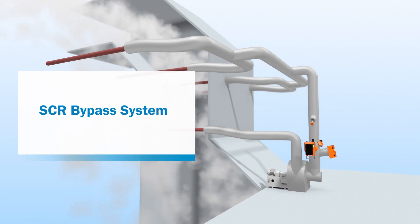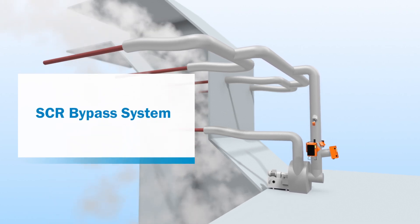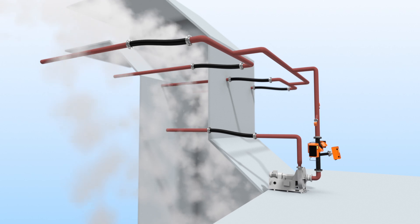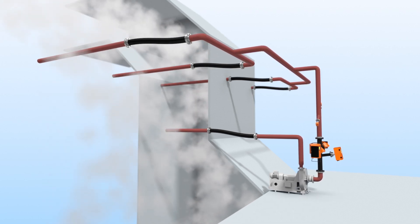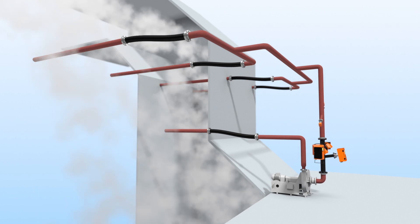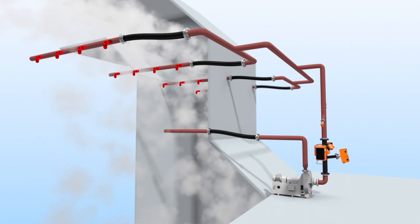Our solution? The SCR bypass system from SICK. To achieve a typical concentration in a gas mixture, a representative sample is taken through evenly distributed ports.